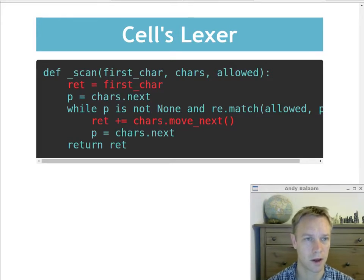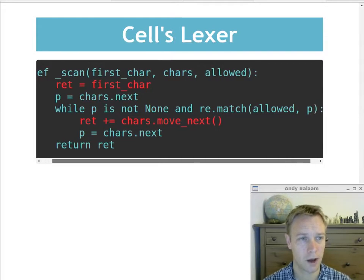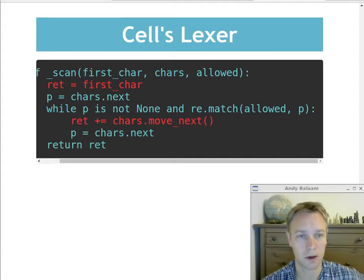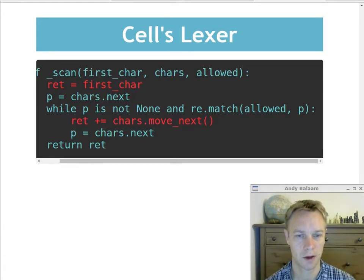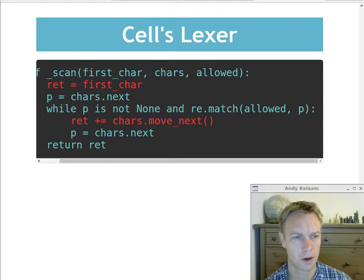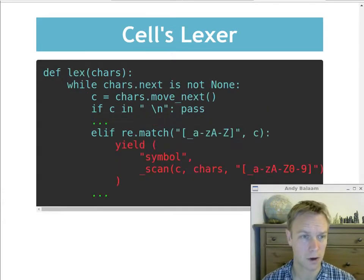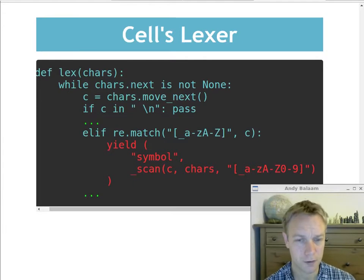So here's the scan function. It takes in the first character, the characters we're looping through, and then a regular expression to say what's allowed to be part of this token. And we're going to return, so we just gather up first char into our return value and then we just loop through saying get the next character and while we haven't hit the end of the file and while this p character is one of the allowed characters because it matches that regular expression we passed in, which in this case was just the same regular expression we used before, just saying it's either a dot or a digit, then we just move on to the next character and keep on just keep on adding to the return value until we stop finding any character that's allowed and at that point we return it.